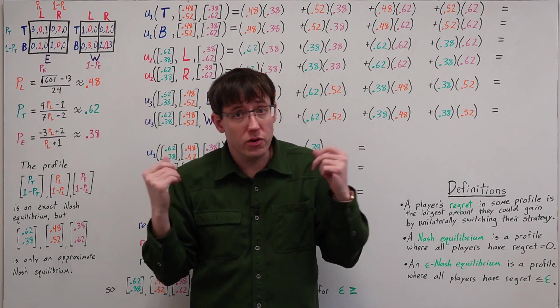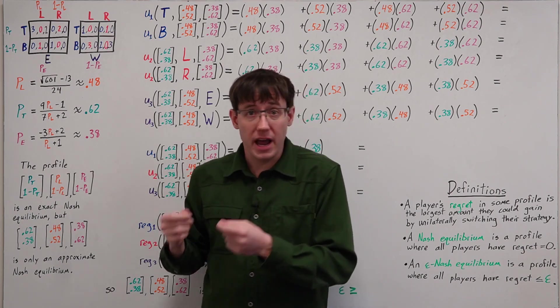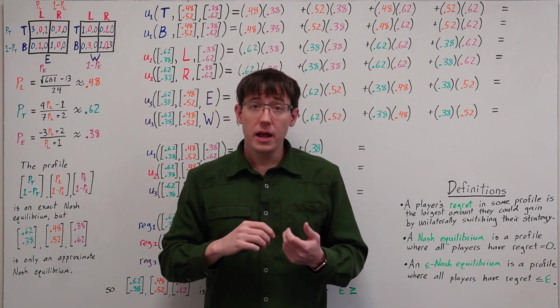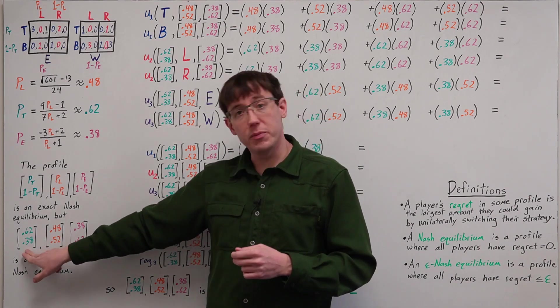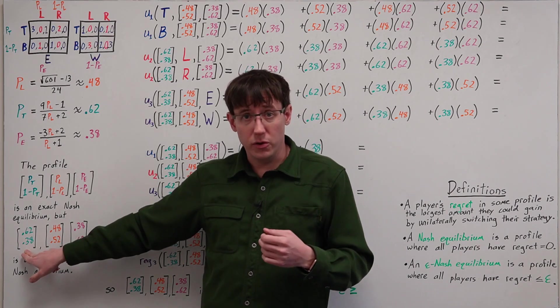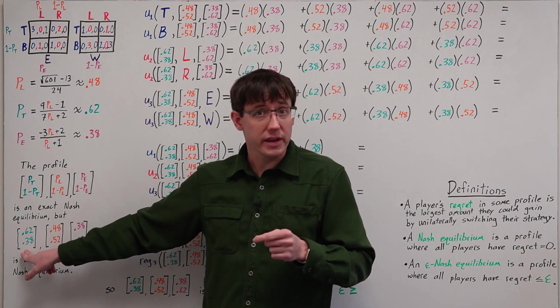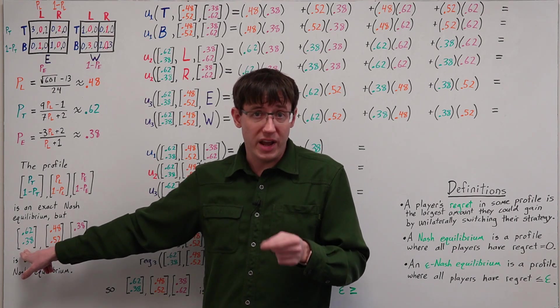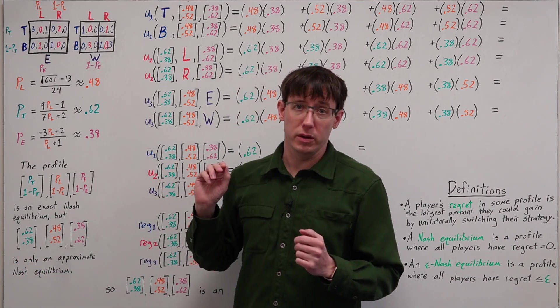This sort of result dates back to the original paper that John Nash published on equilibrium points, and it means that while I can tell you the equilibrium probabilities for player one are approximately 0.62 and 0.38, no matter how precisely I try to write these numbers down, this profile won't be an exact Nash equilibrium.